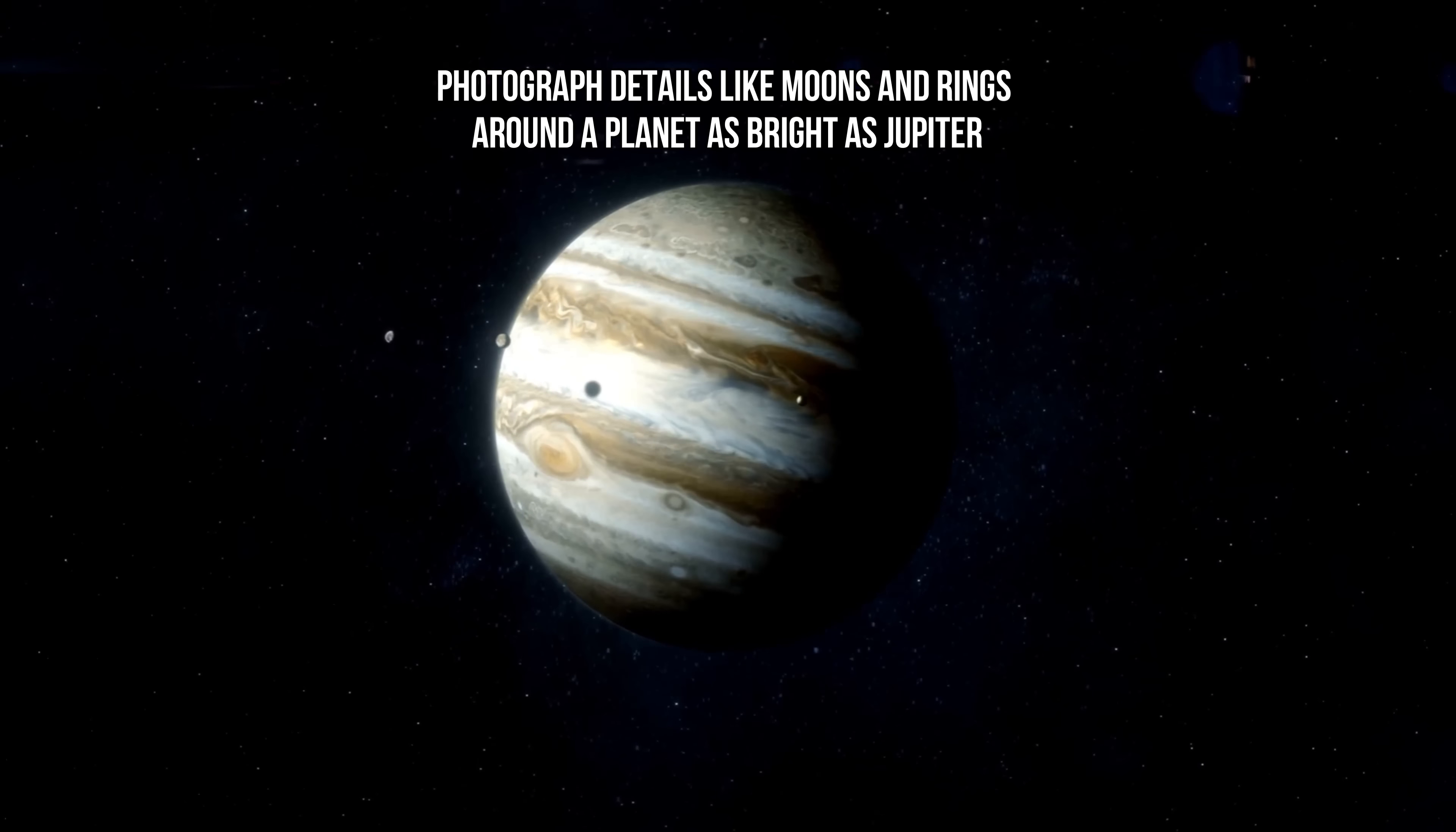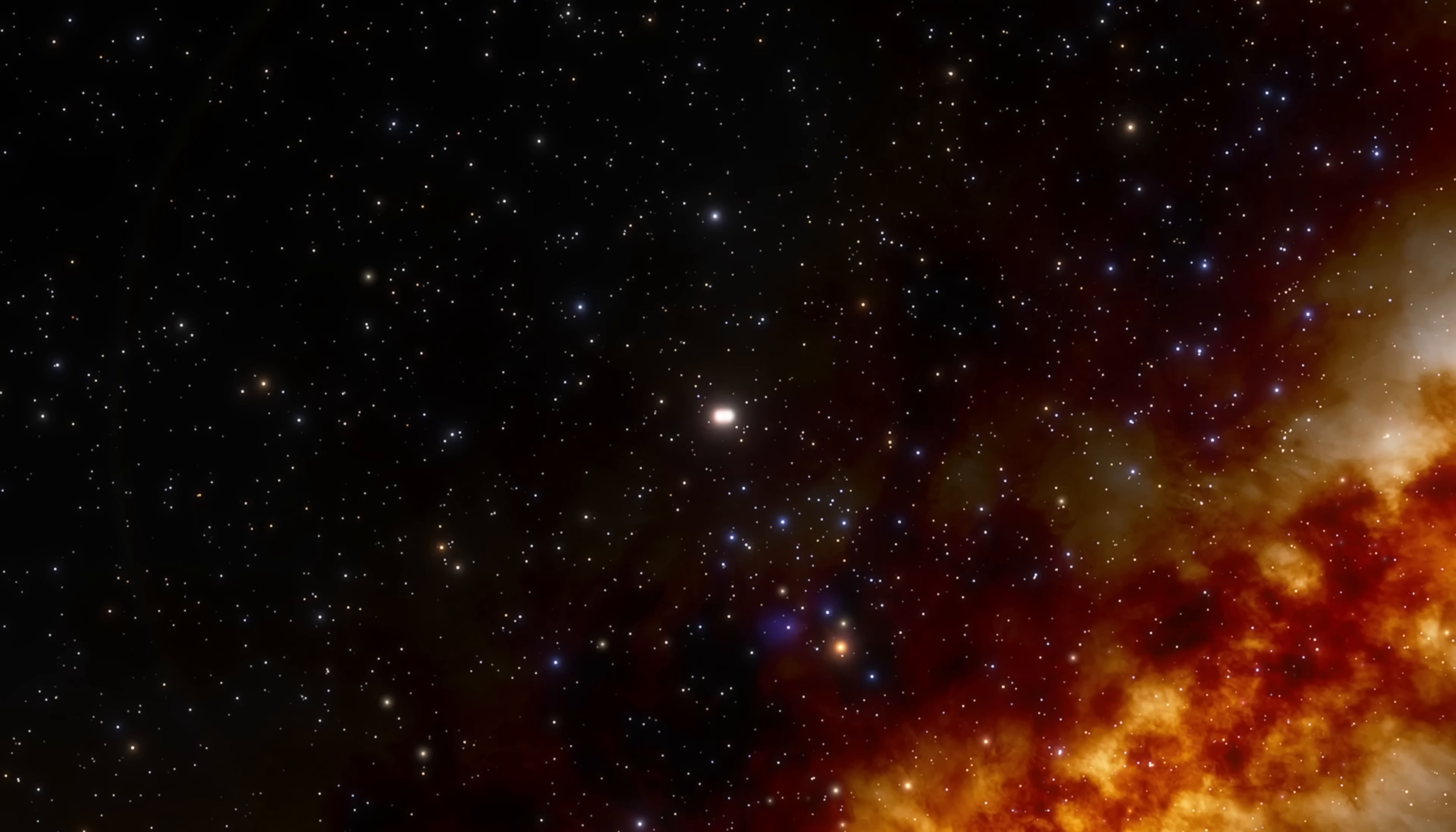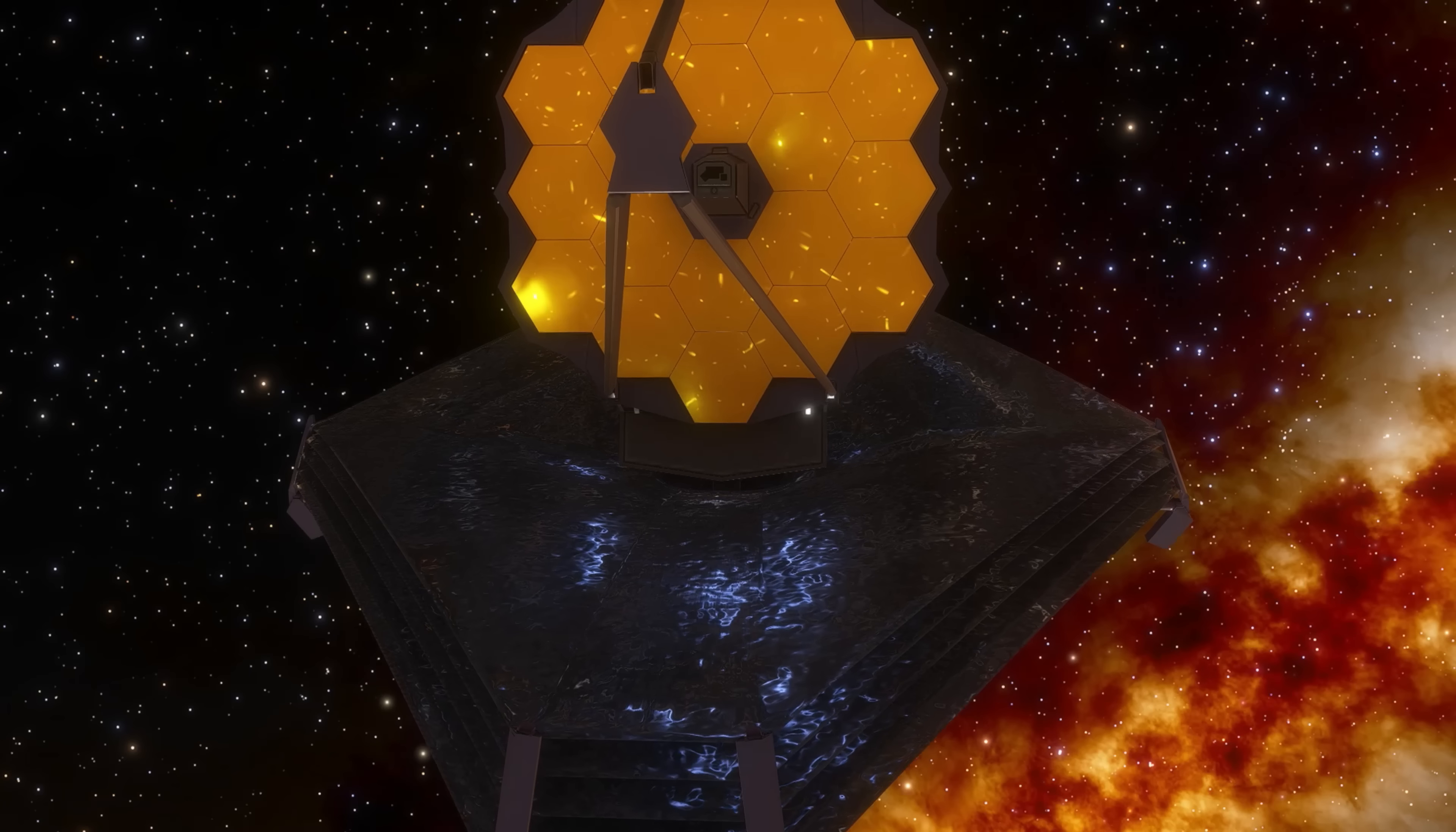Observing a bright planet and its satellites and rings was expected to be challenging due to scattered light that may affect the science instrument employed, and also the fine guidance sensor must track guide stars near the bright planet. However, the images taken by JWST's near-infrared camera suggests that these challenges can be overcome. The images use two different filters, which highlight several wavelengths of light, and they show that JWST is capable of capturing incredible detail.